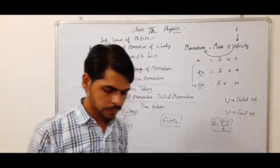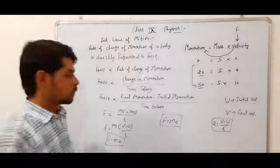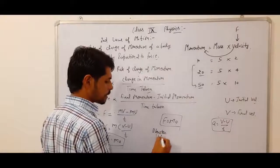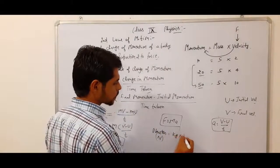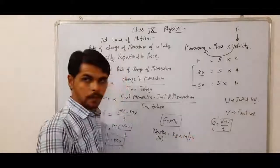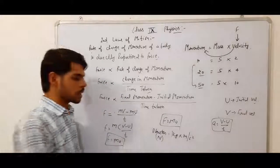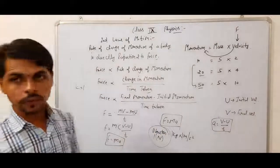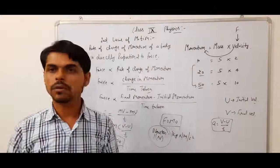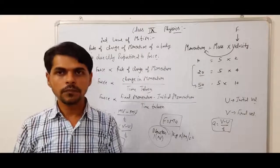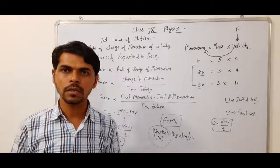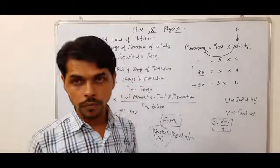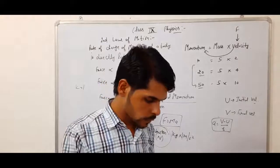Now let us look at units. The SI unit of force is the Newton, represented by capital N. Mass is in kilograms and acceleration is in meters per second squared. If a 1 kilogram body has an acceleration of 1 meter per second squared, then the applied force is 1 Newton. Newton is the SI unit of force.